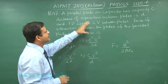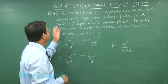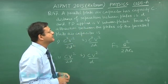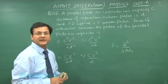They are saying that a parallel plate air capacitor has capacity C, distance of separation between the plates is d, and potential difference applied is V between the plates. You have to find out what is the force of attraction between the plates.